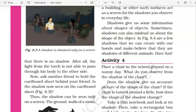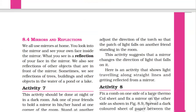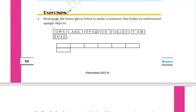Students, in the comment section you can mention if you need an explanation of this chapter and I will upload an explanation for the chapter as well. So from the exercise, the first question is: rearrange the boxes given below to make a sentence that helps us understand opaque objects.